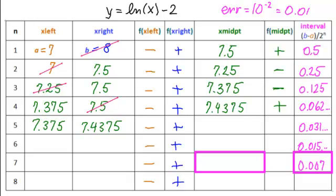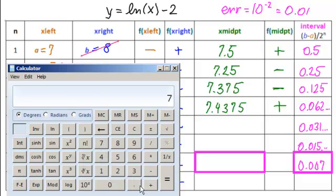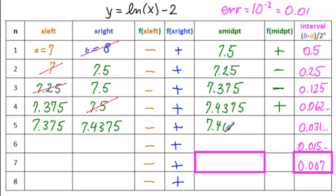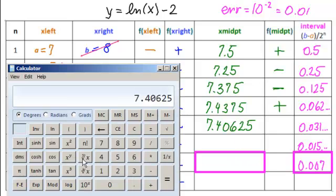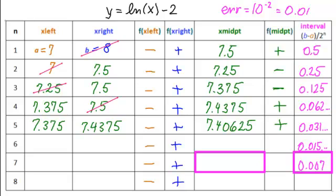So this one comes down: 7.375. This one is 7.4375. We're looking for the midpoint of those. 7.4375 plus 7.375 equals, divided by 2 equals 7.40625. We need the sign of the function value, so ln minus 2 equals. Positive. So again, we're throwing away the right-hand side, the positive.